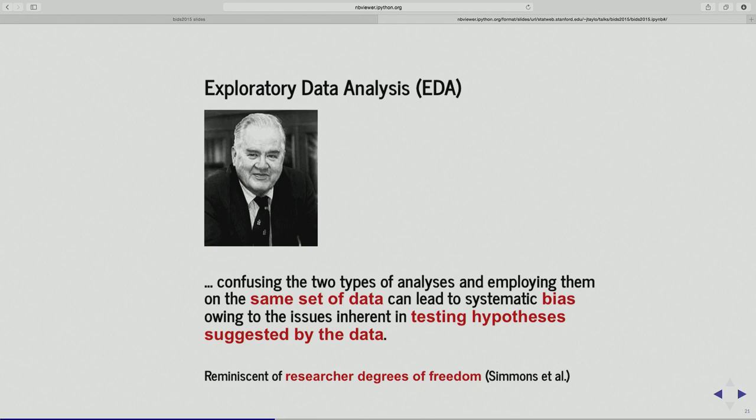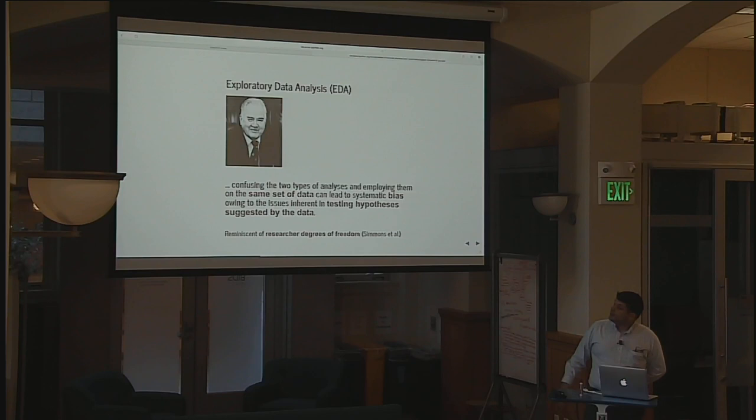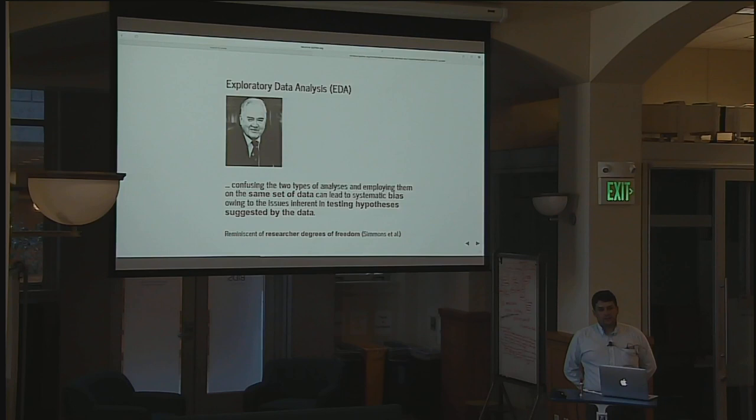This conflict is also reminiscent of the term 'researcher degrees of freedom' — there's a 2011 paper in Psychological Science on undisclosed approaches that researchers use when trying to build a regression model. They had examples showing it's very easy to violate type one error control if you start trying to choose a model based on the data.